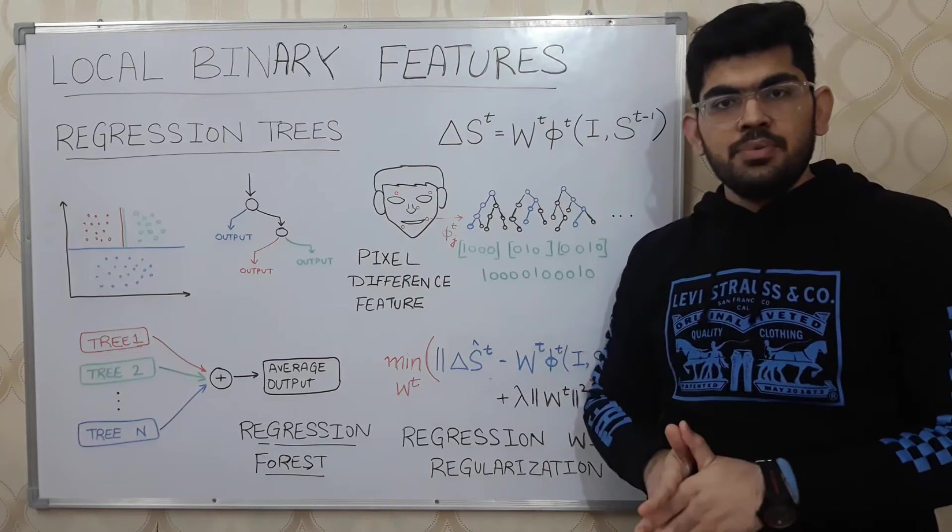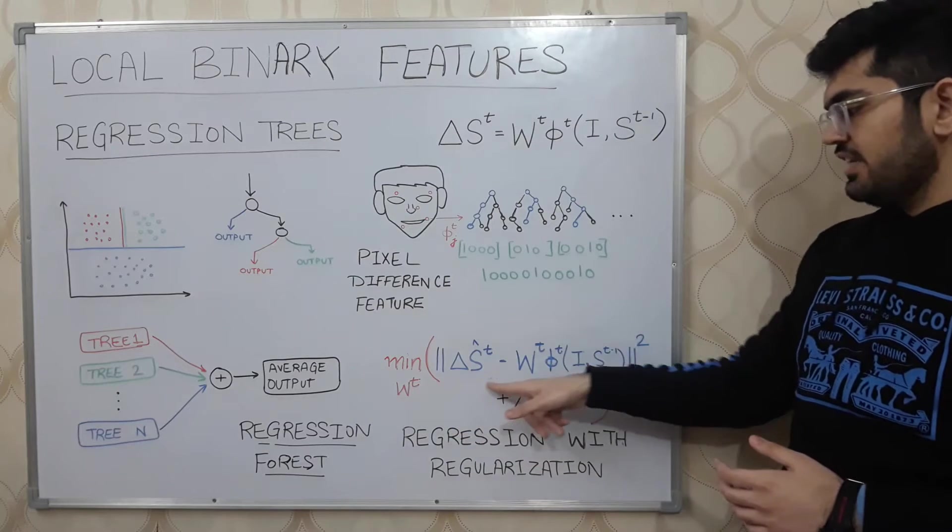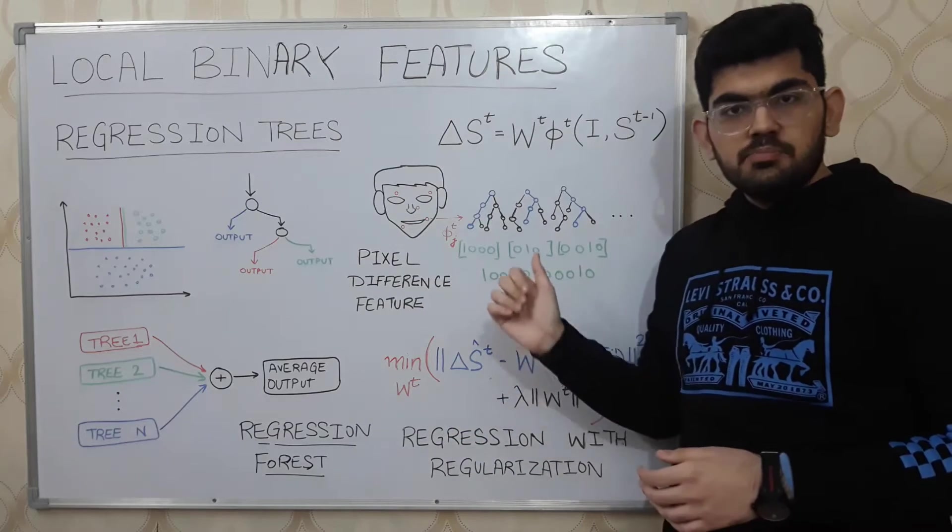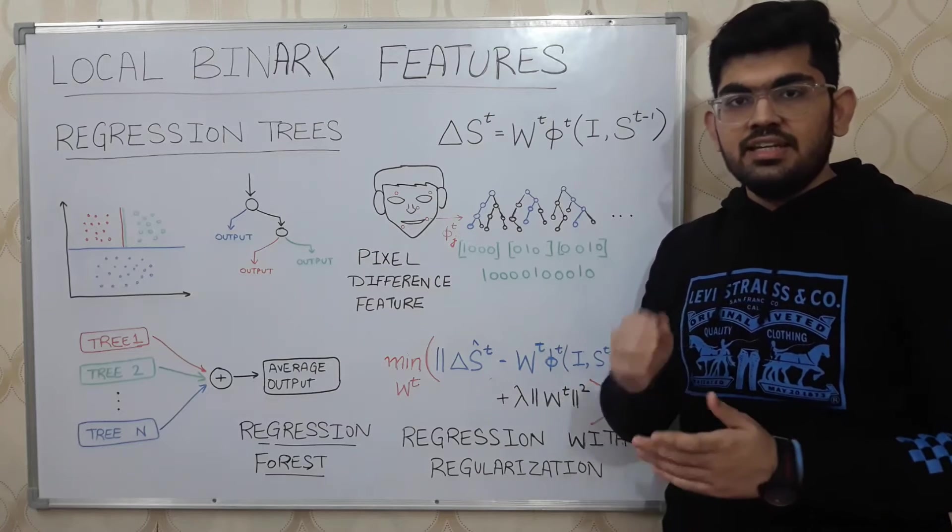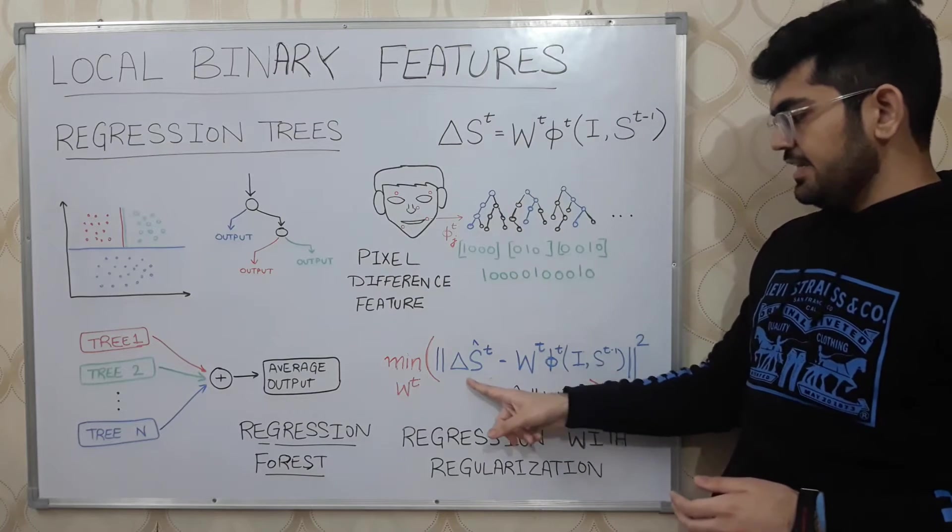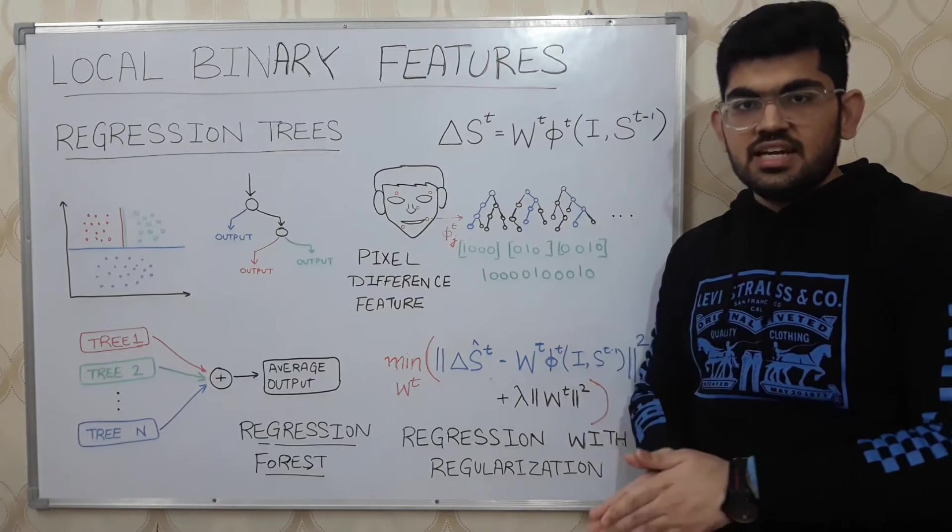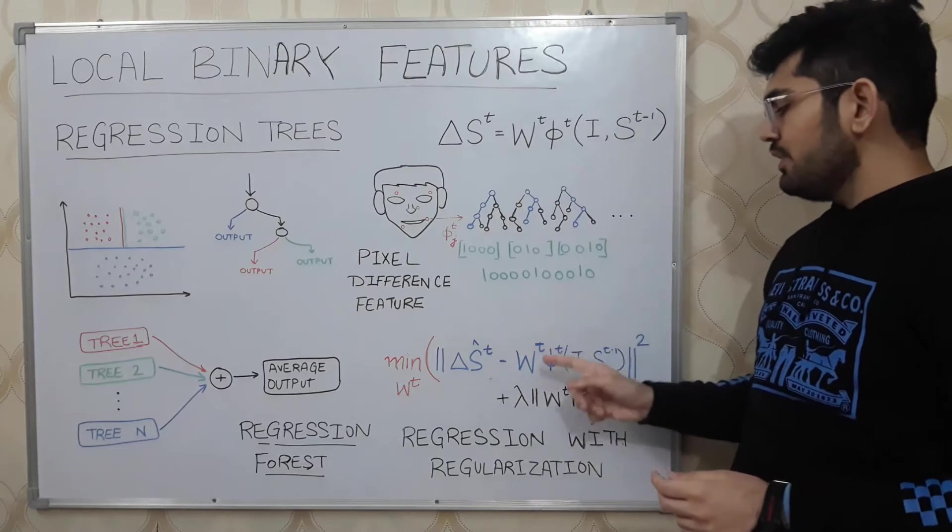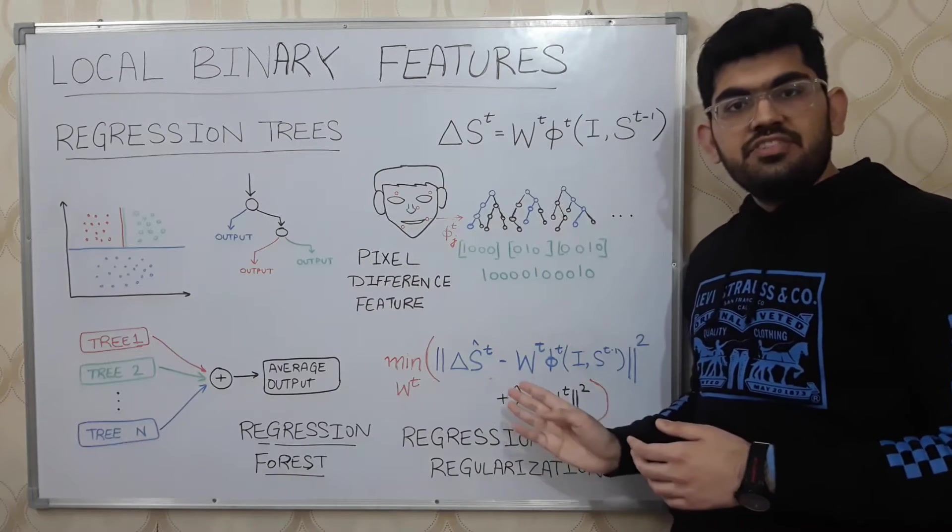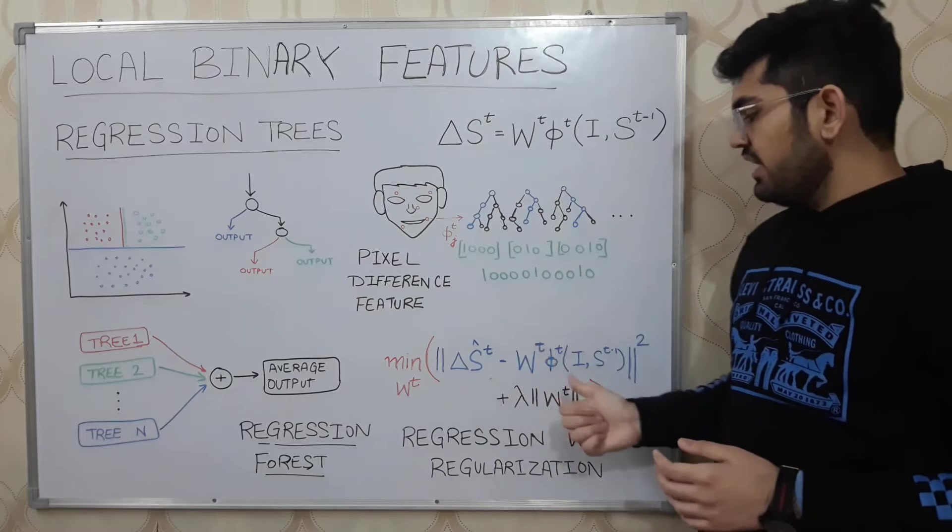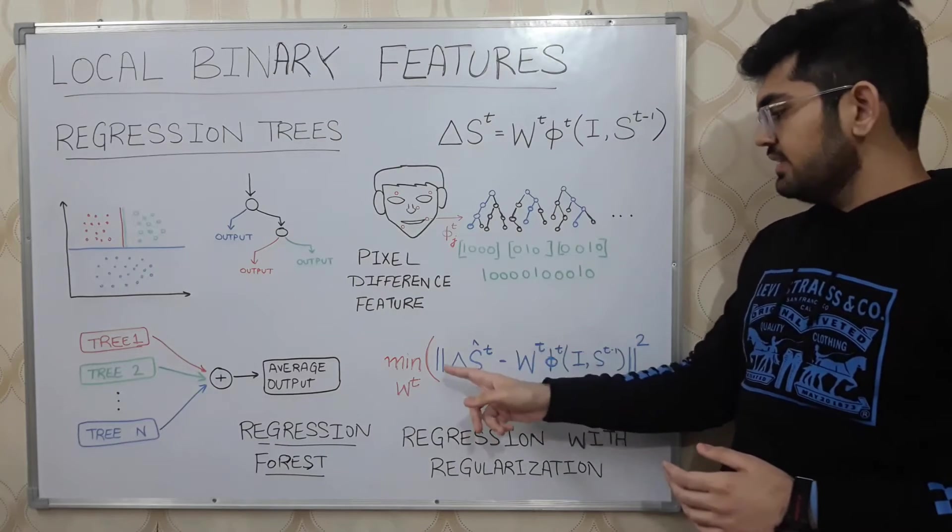In our particular case, we aim to learn W matrix using this minimization expression. This blue term represents the error that we have in calculating Delta ST. This Delta S hat T is the actual change that we need to apply and Wt Phi T is the calculated change. We take the difference, the error, square it and try to find a Wt that minimizes this complete expression.